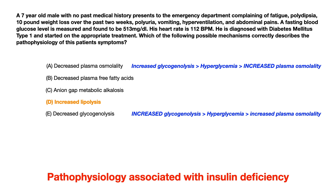So choices A and E are both incorrect. You could figure this out using the vignette — okay, they have type 1 diabetes, so they must be insulin deficient. What would happen with glycogenolysis — would it be increased or decreased? Simply knowing the answer is easy if you've studied the biochemistry pathway, because if you know about glycogenolysis, you should know how it responds to insulin, and whether there is increased or decreased insulin in type 1 diabetes.